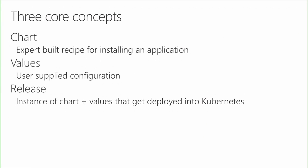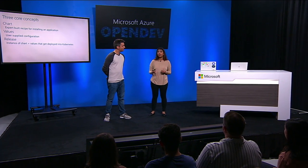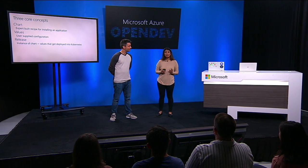A chart is one of the three core components of Helm. The chart is the expert-built recipe for installing an application. Values are user-supplied configuration — this config can live inside your chart, but you can also override it with an external configuration file. A release is an instance of a chart and a values file deployed into your Kubernetes cluster. So: release equals chart plus values. The chart is the recipe, values is the extra configuration you can tune, and the release in the cluster is the thing that you roll back, upgrade, delete, and manage.